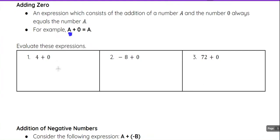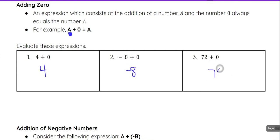So we can evaluate these three examples here. Four plus zero is just going to be four — when you add zero, you get the same number. Negative eight plus zero is still negative eight, and 72 plus zero is still 72.